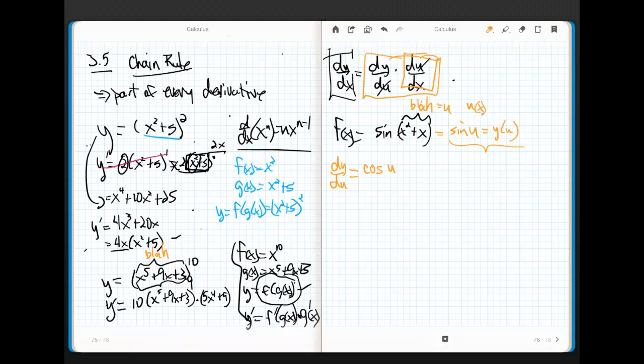Well, let's write up what u of x is. It's x squared plus x, right? So, dy over du is cos u. Du over dx is just the derivative of this guy, which is 2x plus 1.